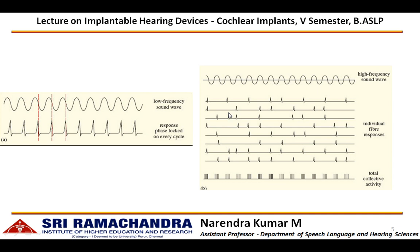Beyond 1000 Hz, because of the refractory period of the auditory nerve fiber, the nerve will not fire continuously for successive cycles. Hence, a group of nerve fibers fires for different cycles of the incoming signal and collectively they represent the actual signal. The neural firings represent the actual signal by acting together — this is called the volley principle. The volley principle holds good for frequencies up to 5000 Hz. Beyond that, the auditory nerve fibers fire in a probabilistic, random manner.